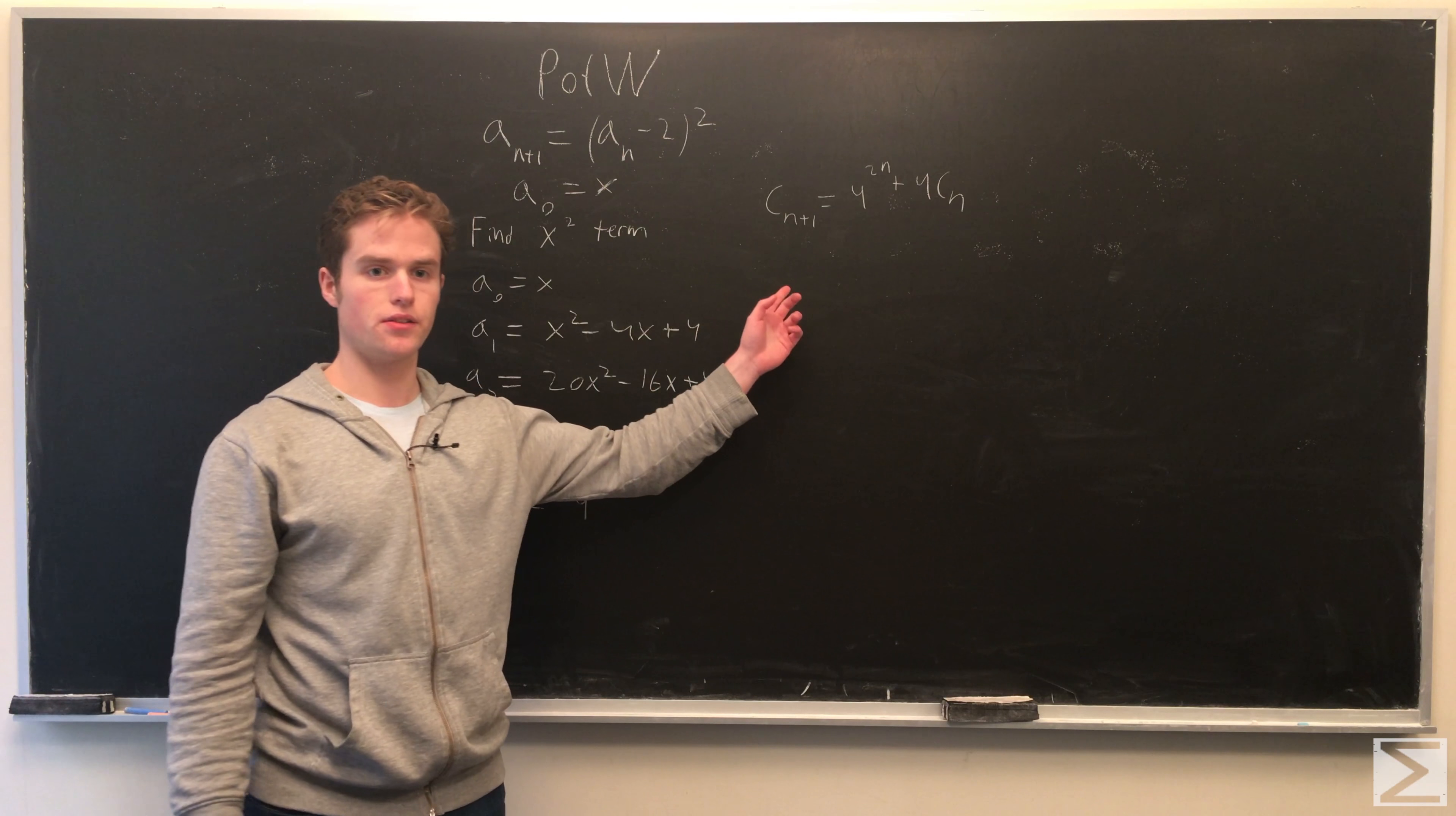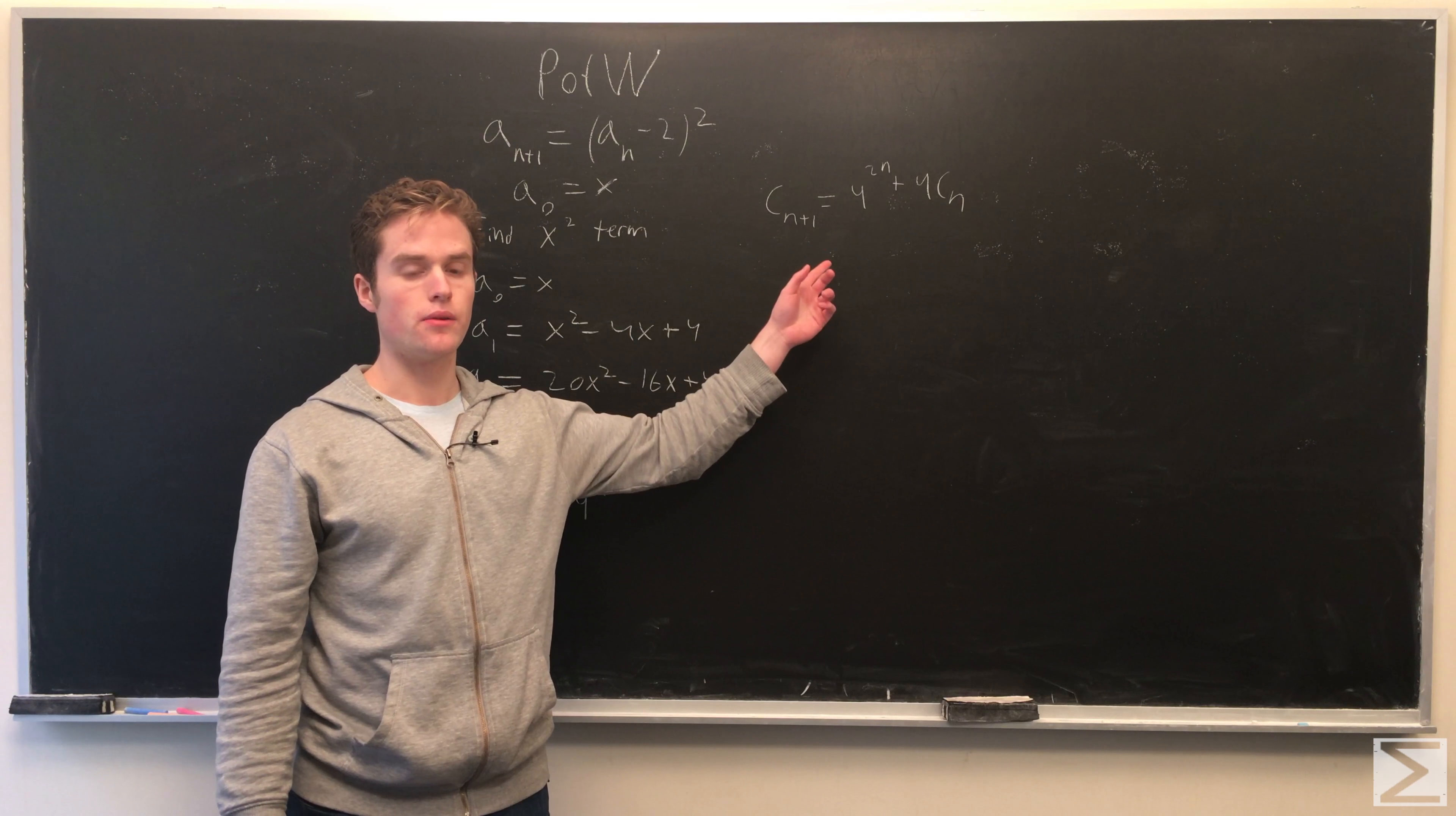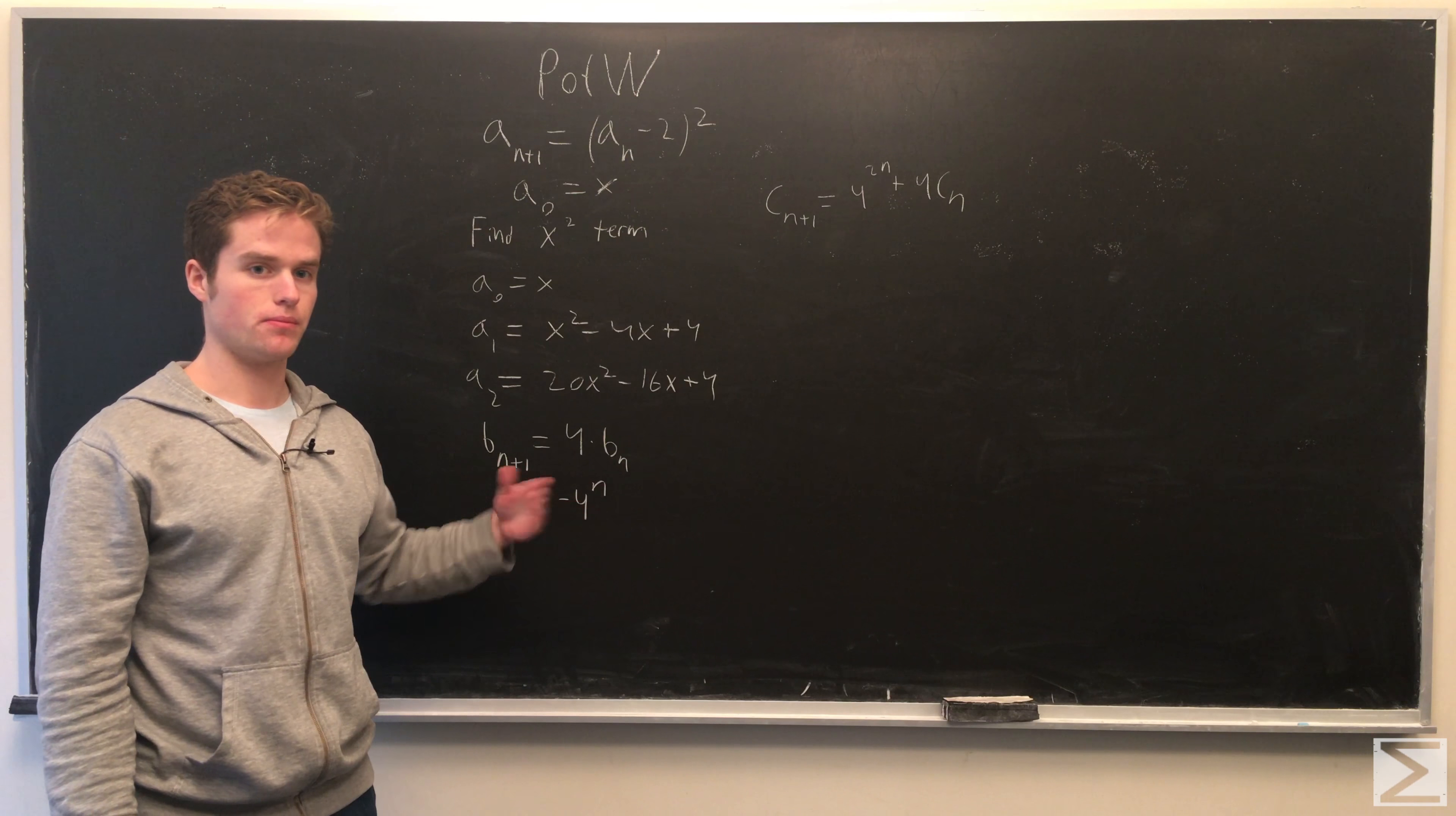So, calling cn the term in the form of x squared for n. We can see that this recurrence is true by explicitly trying to calculate x squared from a previous term.